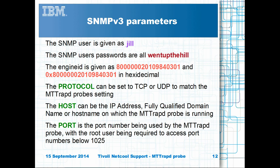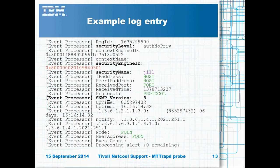In the SNMP trap command you can set the engine ID, user and password, as well as protocol, target host and port. The probe using the mttrapd.conf file will log out the trap details if the file was read successfully. The send trap details are highlighted for reference purposes.